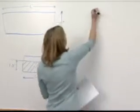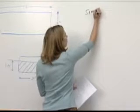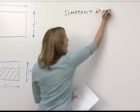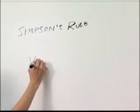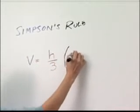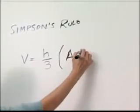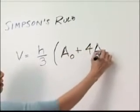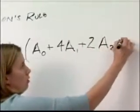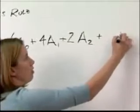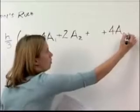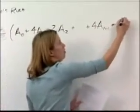So the formula for Simpson's rule, it can be found in your packet. It is the volume equals H over three times A0 plus four times A1 plus two times A2. You can have more sections plus four times A times N minus one plus AN.